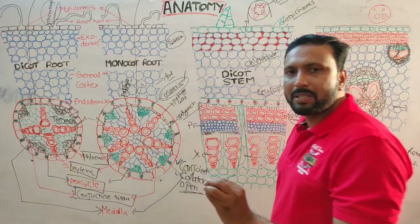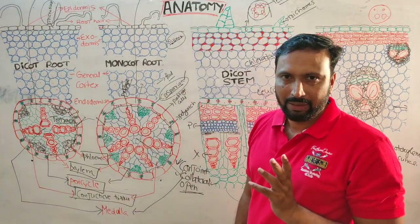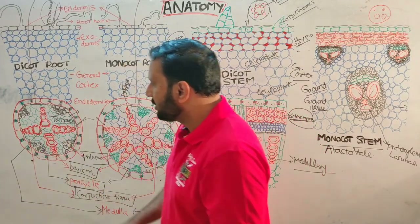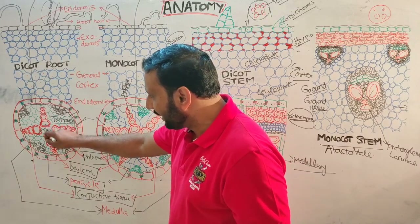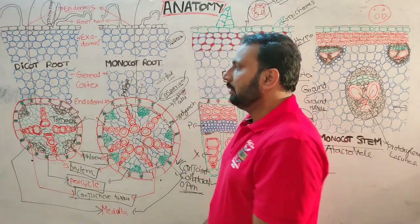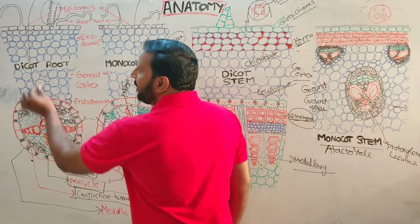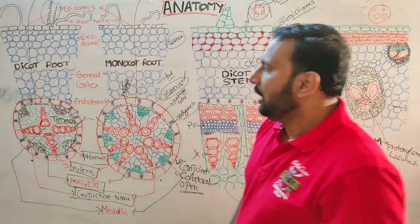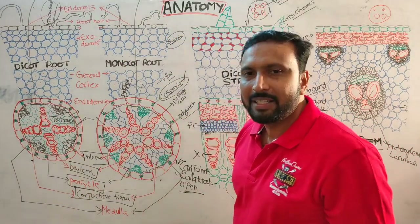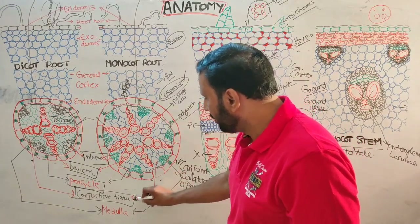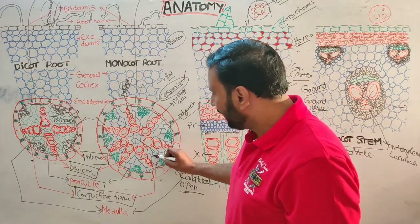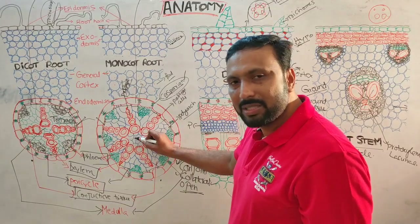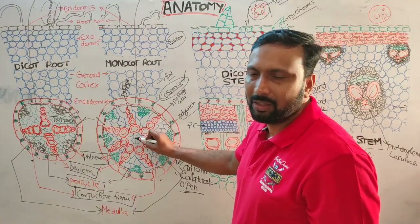In dicot roots, medulla is very poorly developed or absent, because the metaxylem crushes the medulla. In monocot roots, medulla is very well developed. Protoxylem faces towards the epidermis in both — this is exarch arrangement. In between xylem and phloem, a tissue called conjunctive tissue is present, which stores food and gives mechanical strength. Medulla also gives mechanical strength and stores food materials.